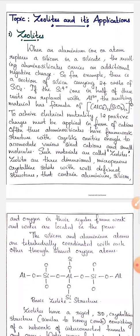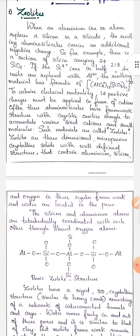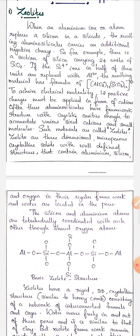Zeolites are three-dimensional microporous crystalline solids with well-defined structures that contain aluminum, silicon and oxygen in their regular framework and also certain pores or vacancies within them.